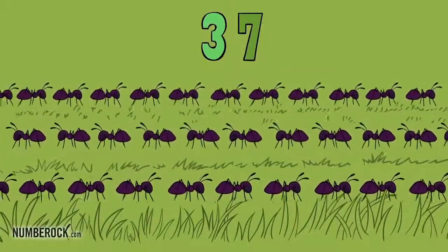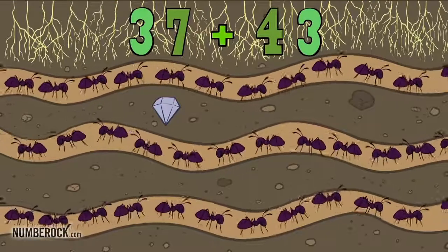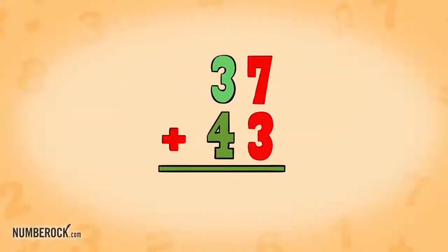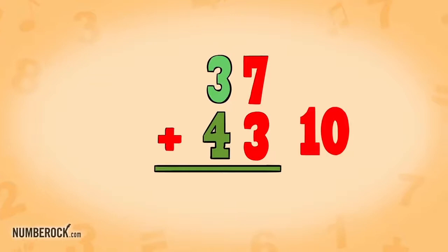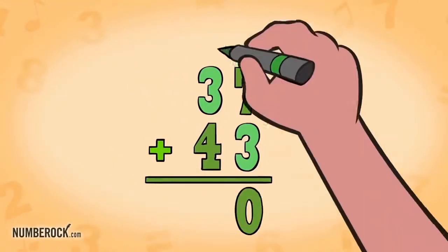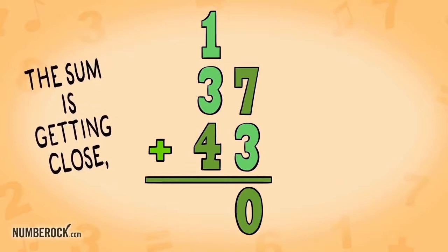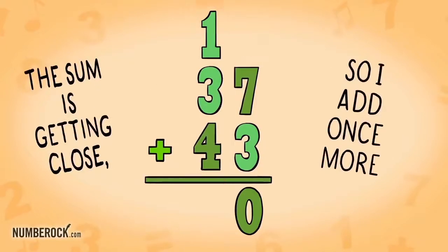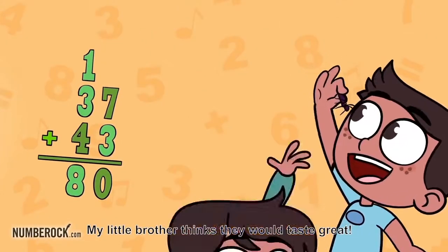37 ants above ground plus 43 ants underground. 7 plus 3 equals 10, each one of them is my special insect friend. Zero stays, the 10 heads next door. The sum is getting close so I add once more. 1 plus 3 is 4, plus 4 is 8. My little brother thinks they would taste great.